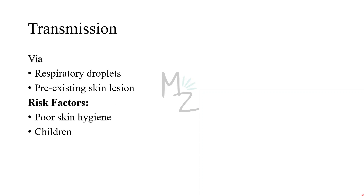Transmission. Diphtheria is transmitted via respiratory droplets or airborne droplets. The organism can also infect the skin at the site of a pre-existing skin lesion. Risk factors: this disease occurs primarily in the tropics but can occur worldwide in indigent persons with poor skin hygiene, and it is also common in children.